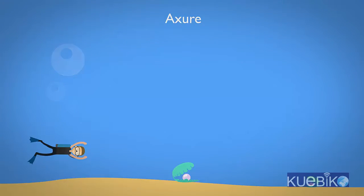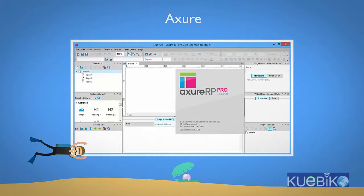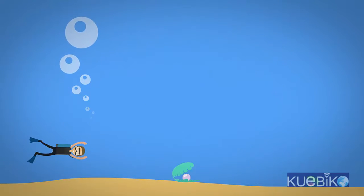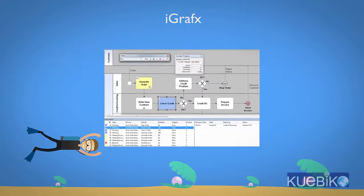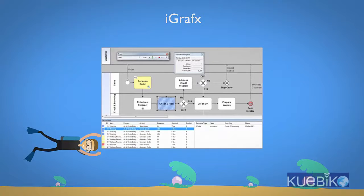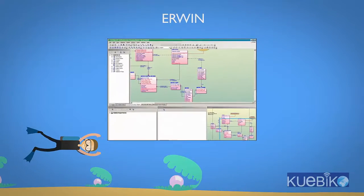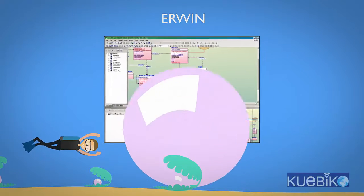Next, we will learn Acture, a tool used to create mock screens or wireframes. Then we will learn iGraphics, a tool used for creating process models in BPMN. We will then learn Erwin, which is a tool used for data modeling.